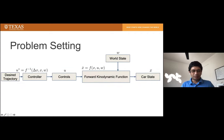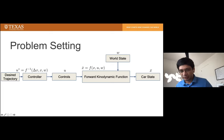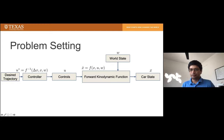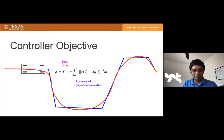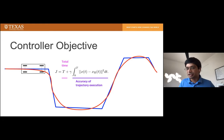Here's the problem setting: we have a desired trajectory fed into a controller, which provides controls that, after running through the forward kinodynamic function in the real world and based on some world state, will produce some states. The goal is to follow the given trajectory. We want to optimize for the total time taken and the accuracy of execution, penalizing how far the actual path deviates from the desired trajectory, since you might have obstacles or points you want to hit.